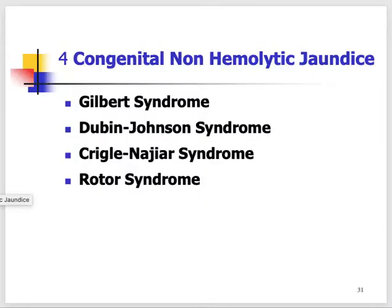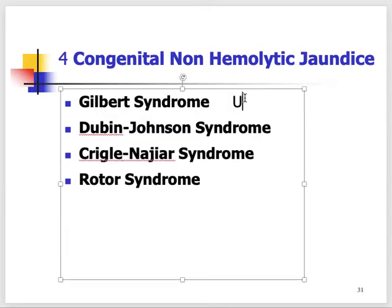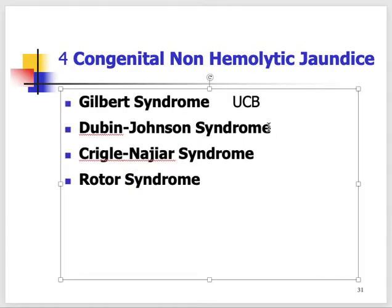Gilbert syndrome is a very mild liver disorder where patients have a mutation causing decreased activity of the enzyme glucuronyl transferase. These people are normally completely fine, but during stress, infection, or fasting they develop jaundice because they have slightly decreased enzyme activity. Since they cannot conjugate properly, this results in unconjugated hyperbilirubinemia.